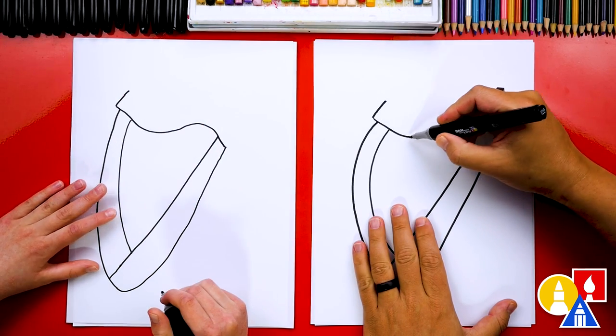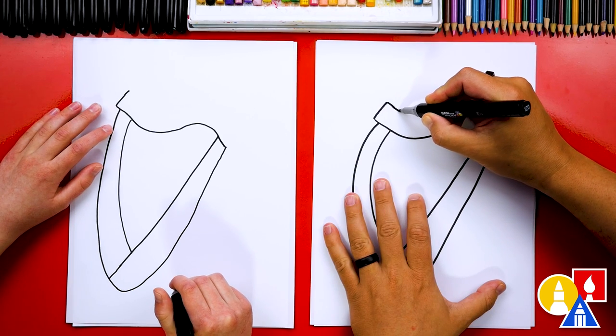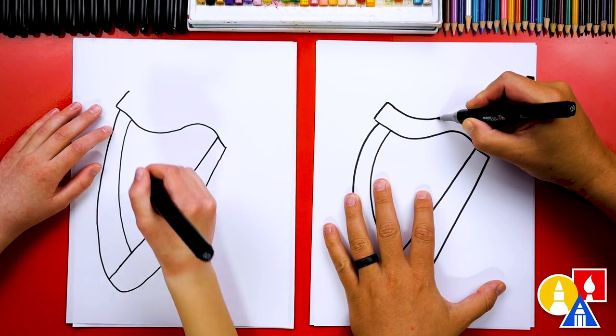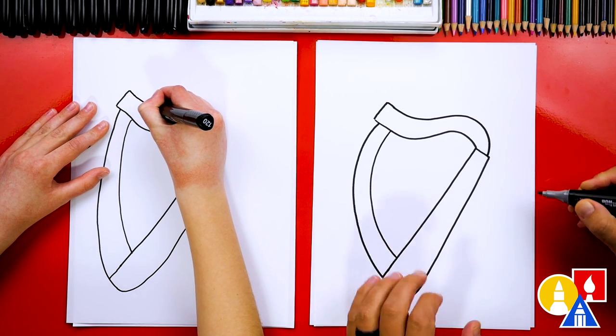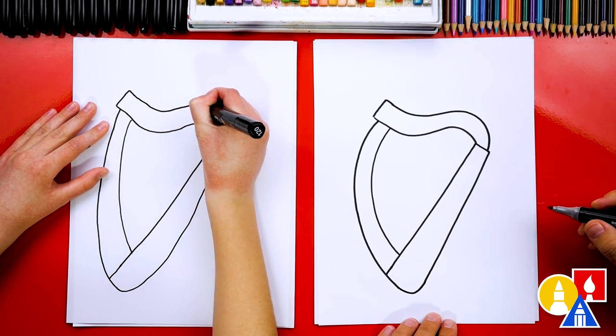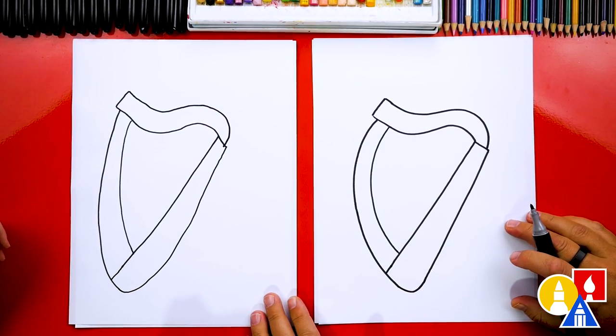And then we're going to draw another S curve that matches this, but I'm going to start further away and then get a little closer. And then right here, I'm going to curve in to finish the harp shape. Good job, Austin. That looks awesome.